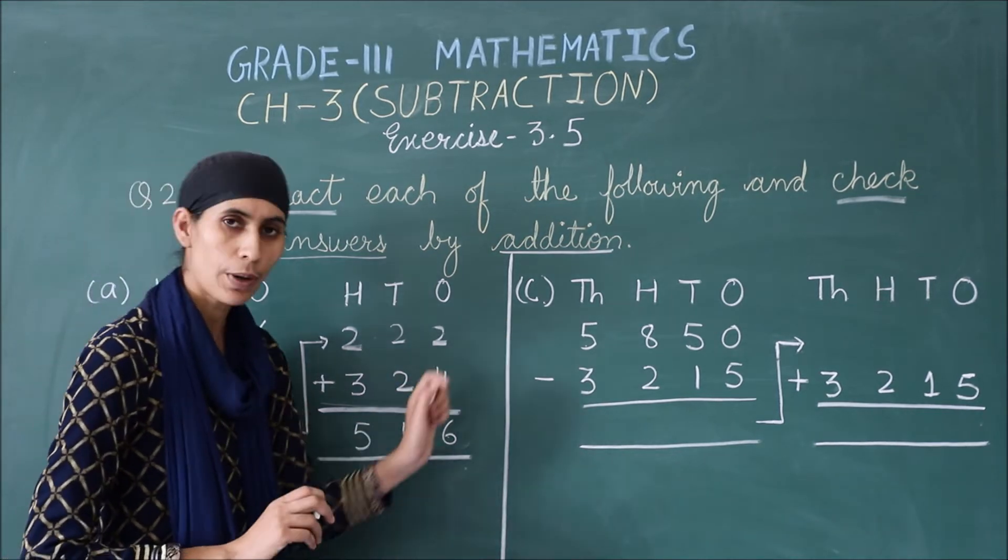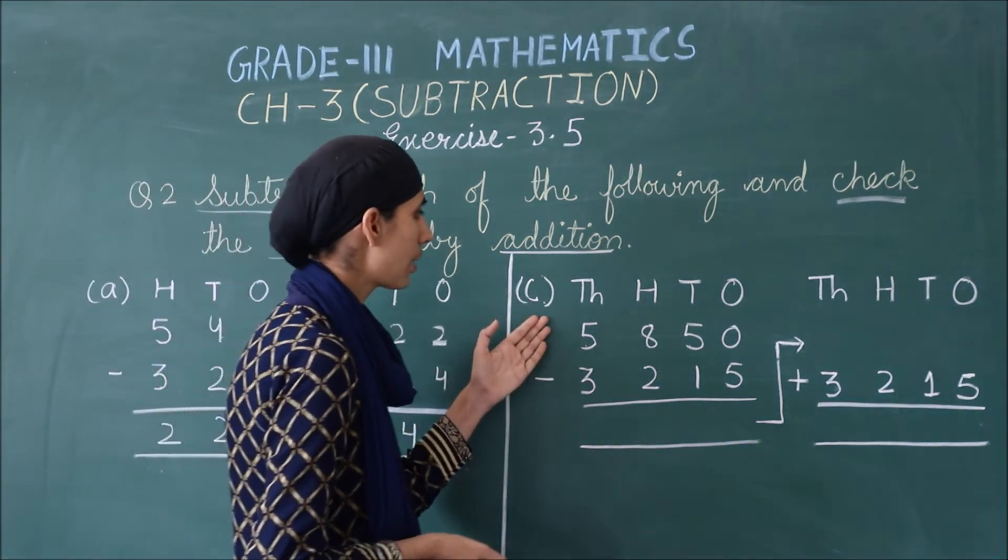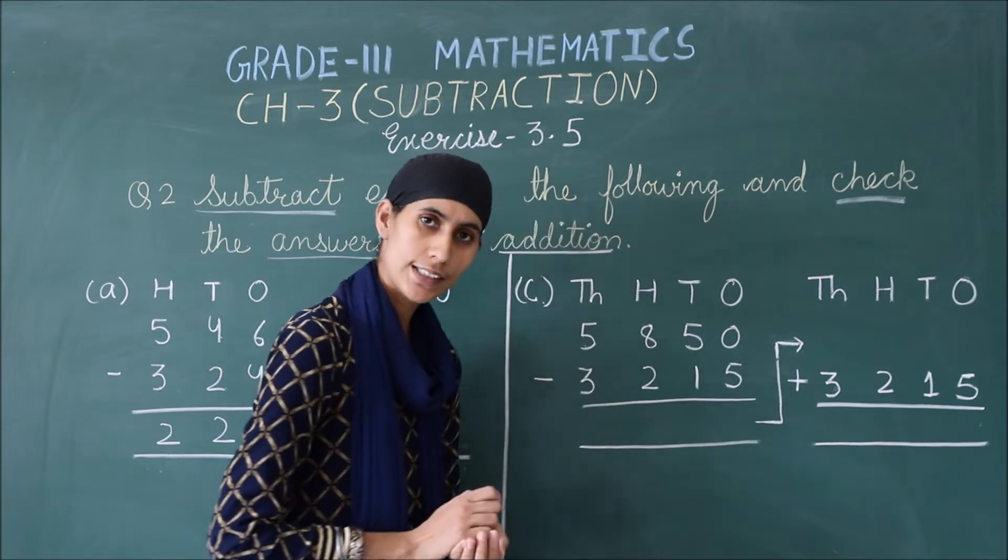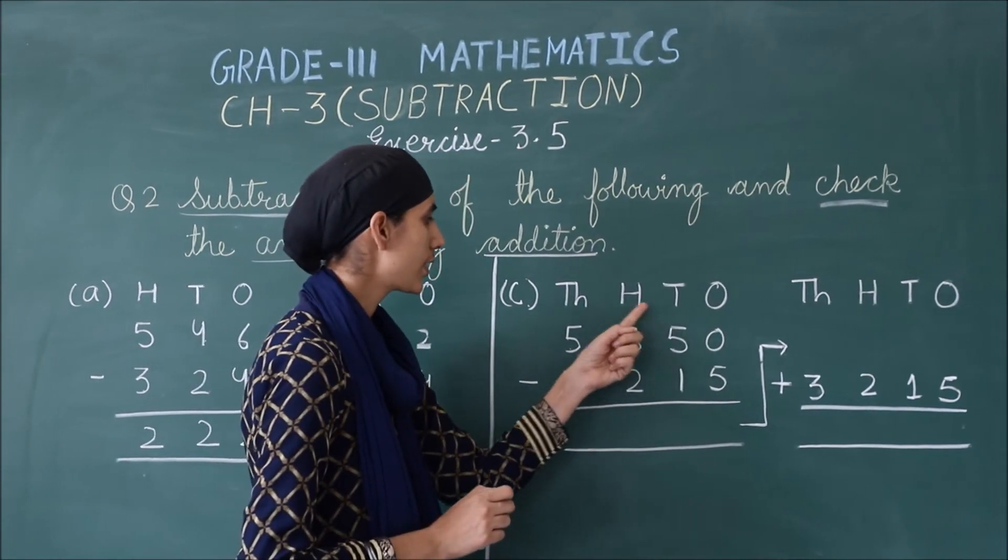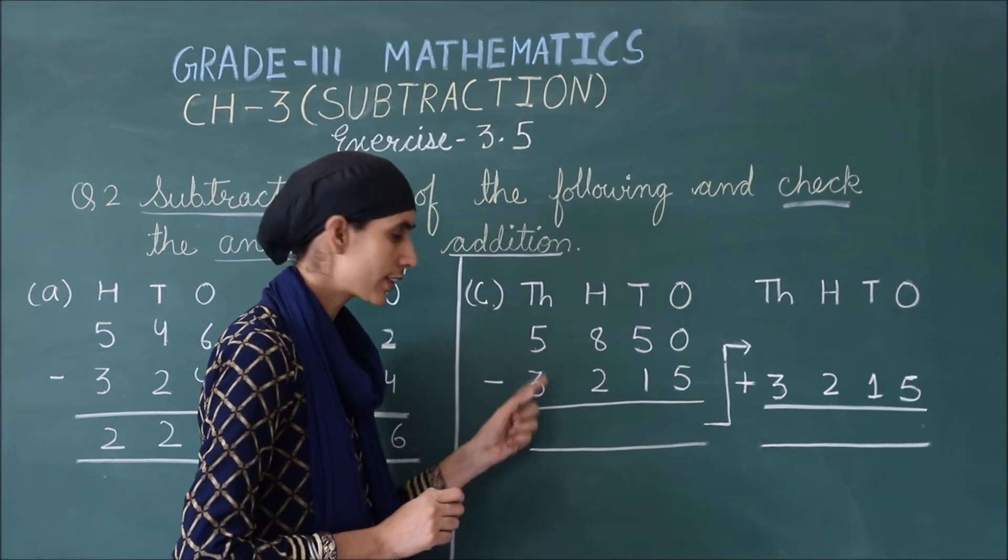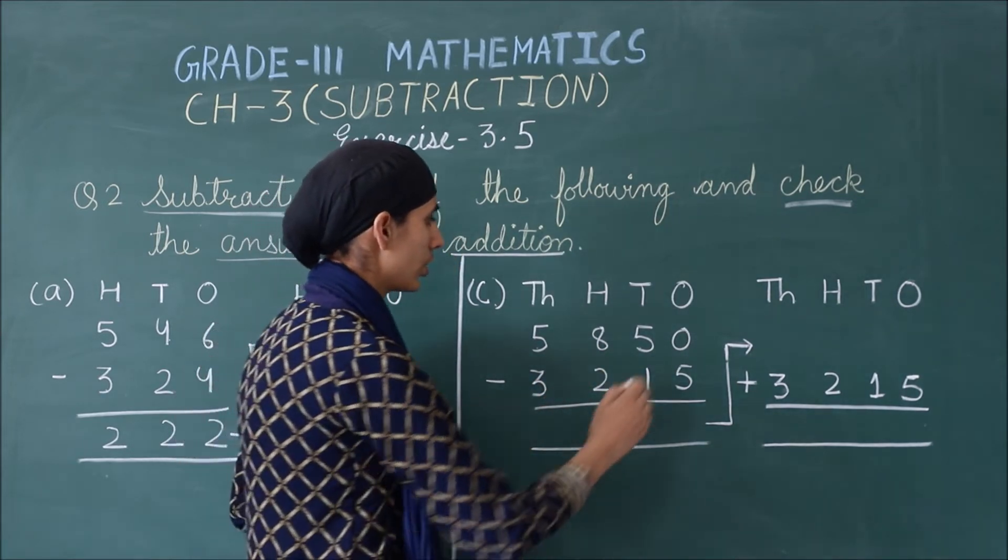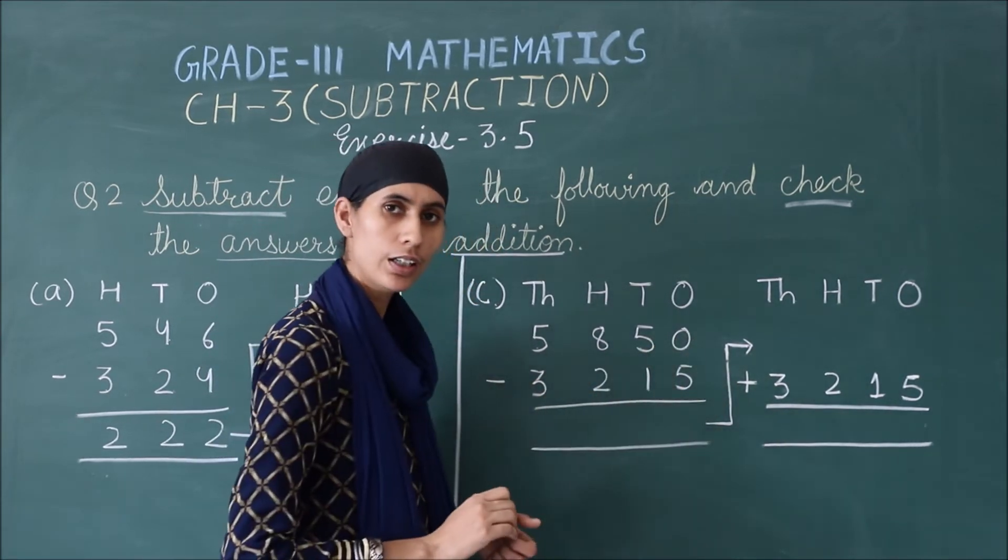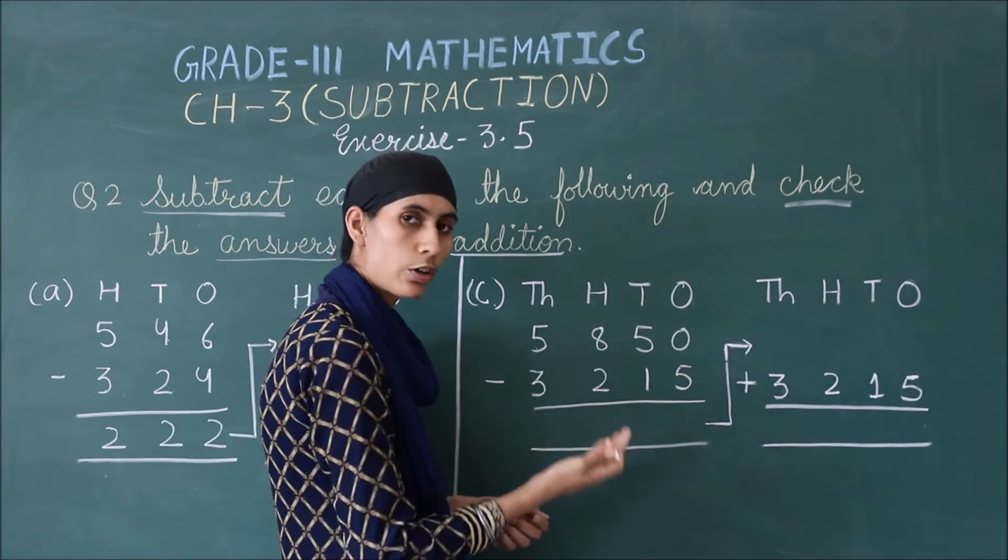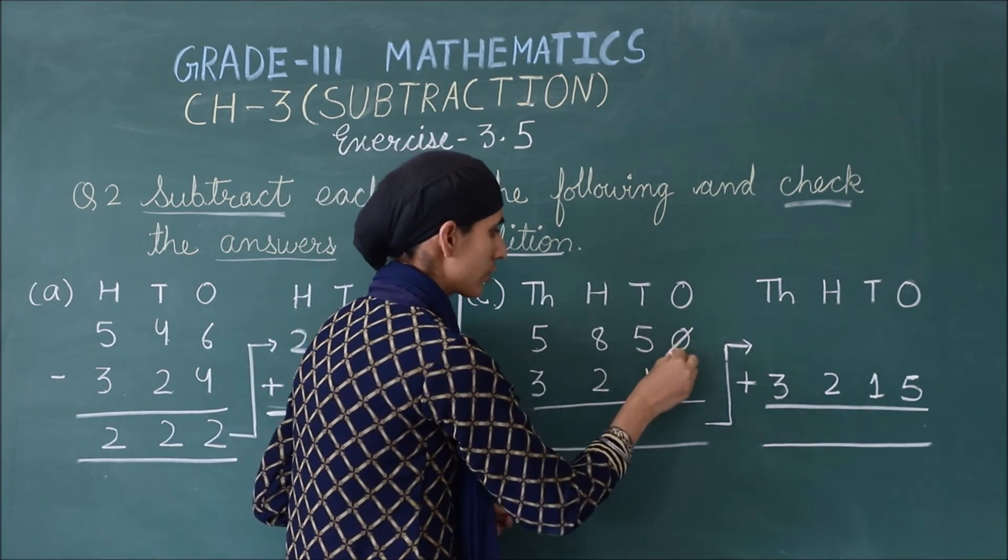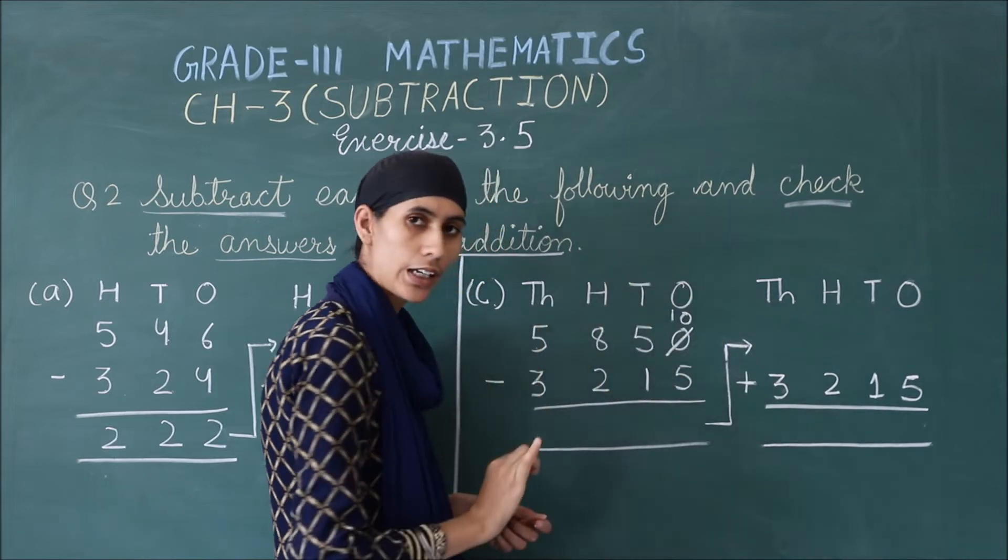We will see one more part. In this part you have seen, I have 4 places written. So we have 4 digits, which we have to subtract. So 0 minus 5 is not possible, so you have to borrow. This will become 10.